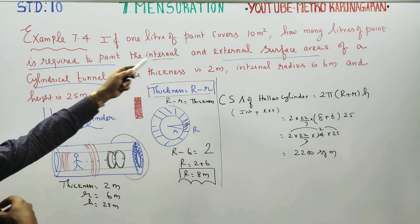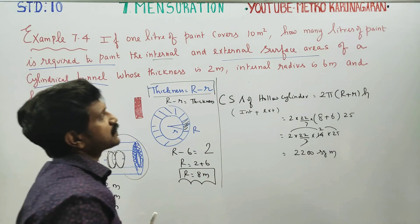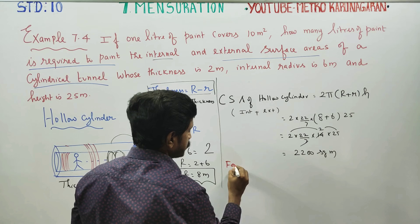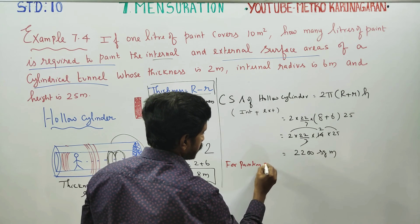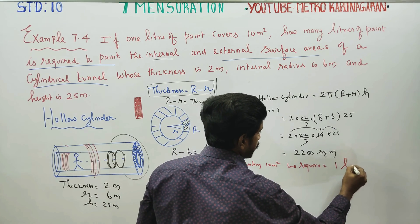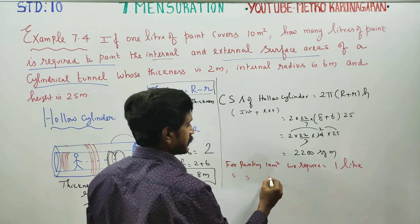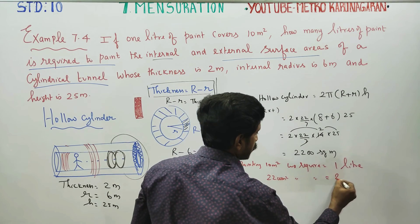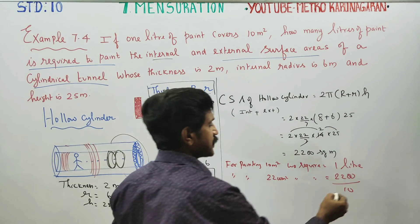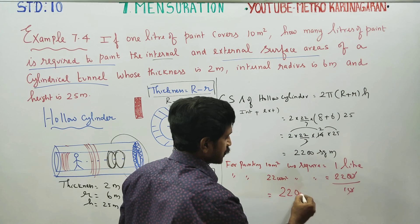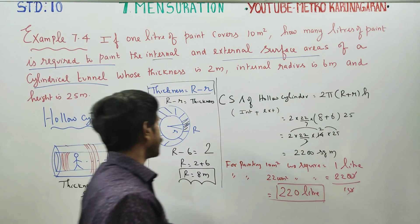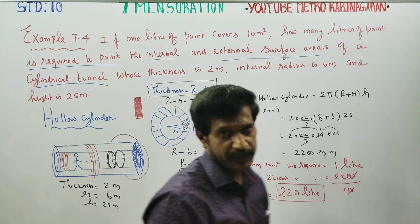The total surface area is 2,200 square meters. Since 1 liter of paint covers 10 square meters, the number of liters required is 2,200 divided by 10, which equals 220 liters. So 220 liters of paint will be required to paint the internal and external surface of the cylindrical tunnel.